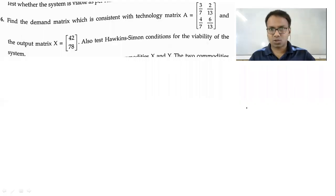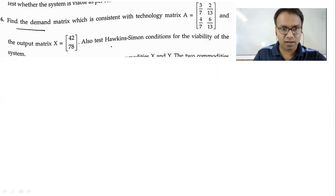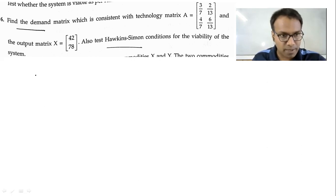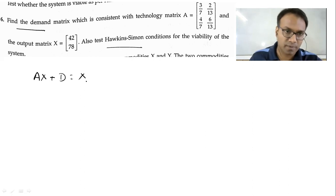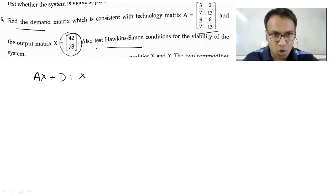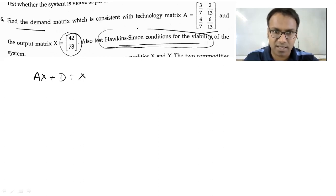The last question asks us to find the demand. So far we have found gross output and checked viability. Now a demand question: the basic formula is A × X + D = X, so demand D = X minus AX. The technology matrix A is given, and the gross output matrix X is also given. Also test Hawkins-Simon — I'll leave that for you; I'll only calculate demand.